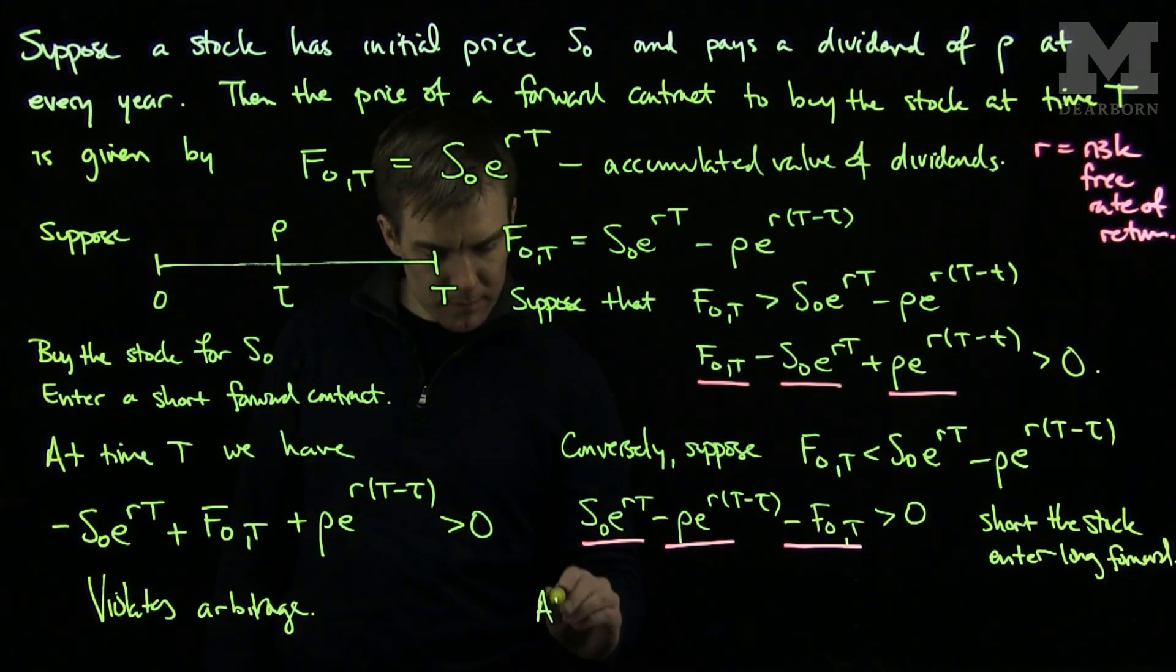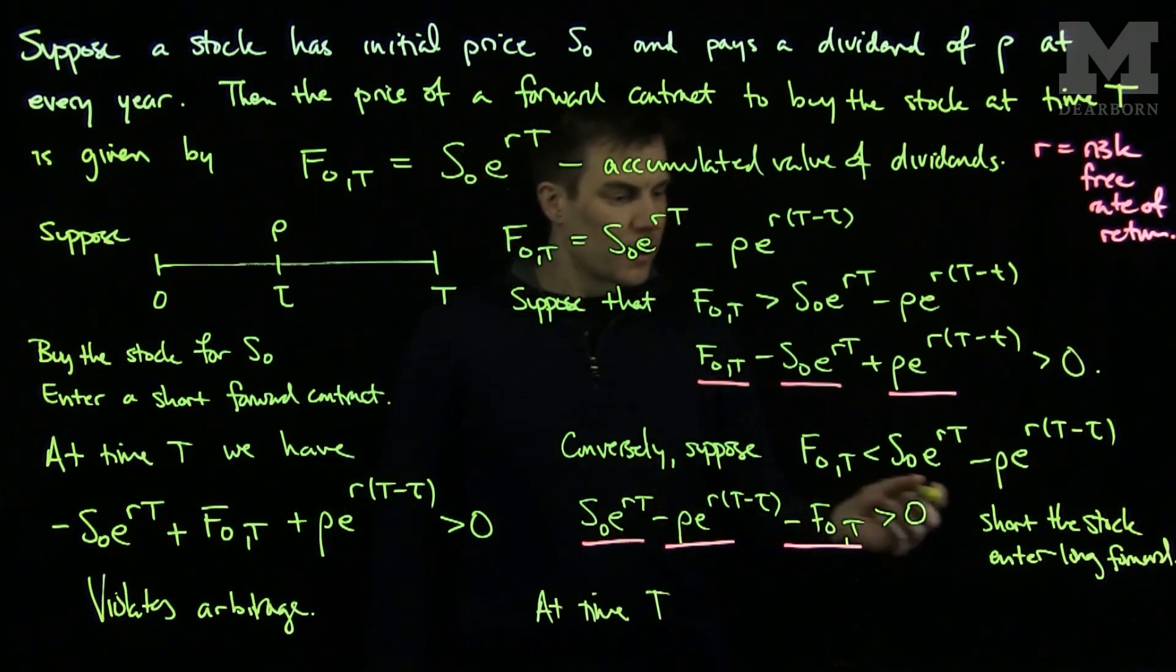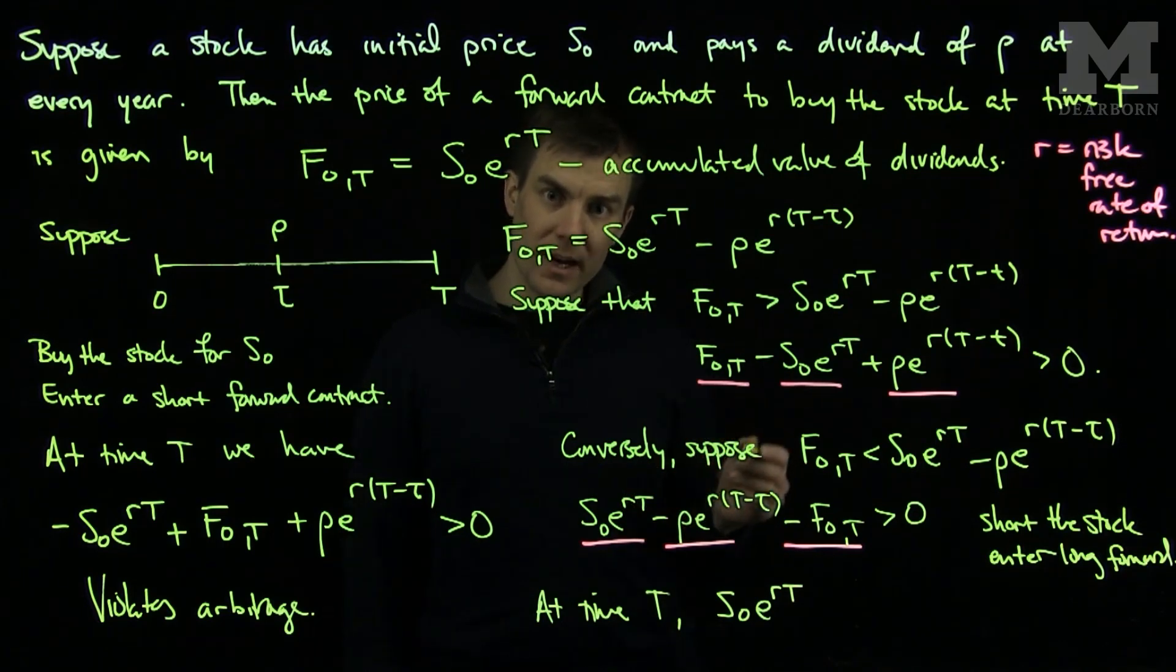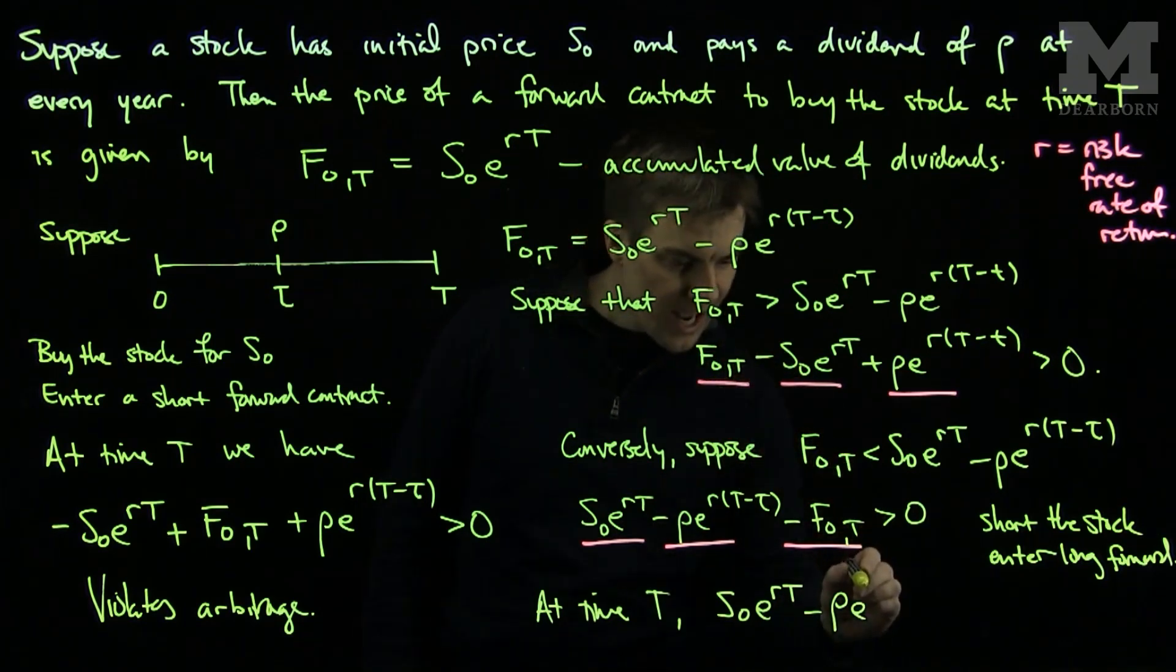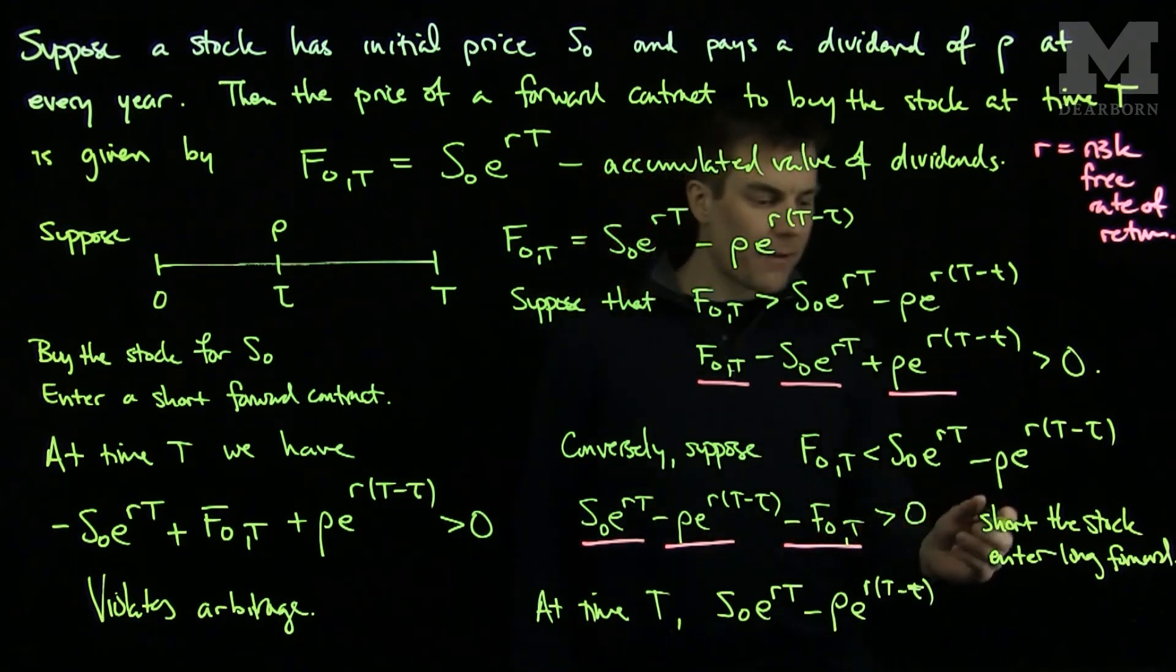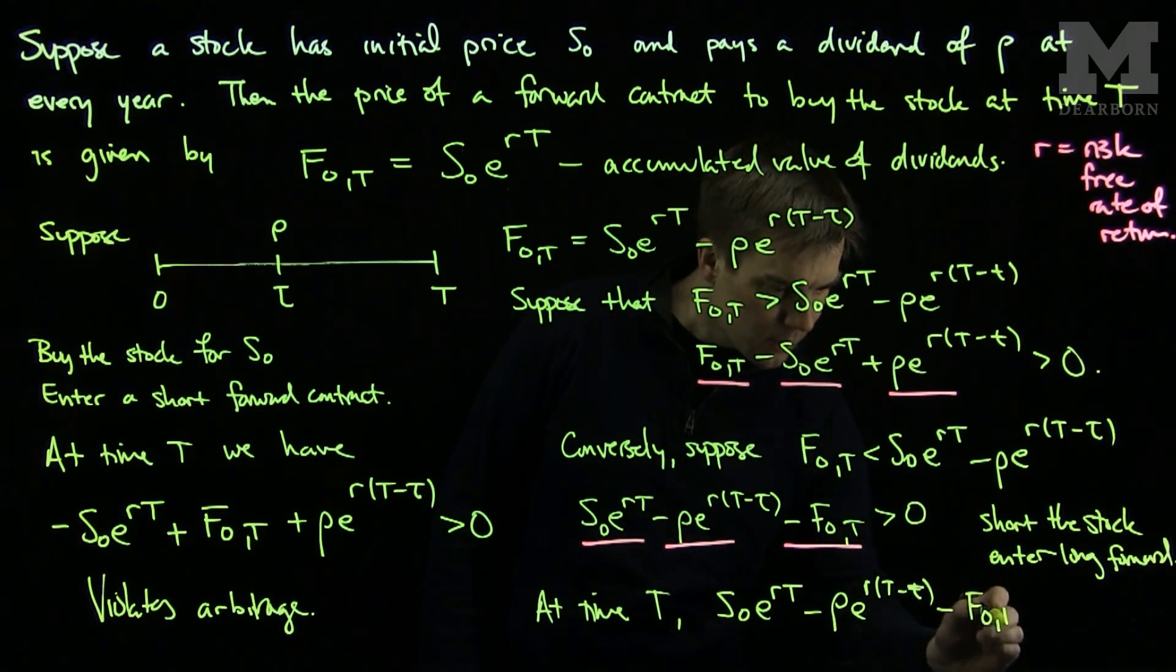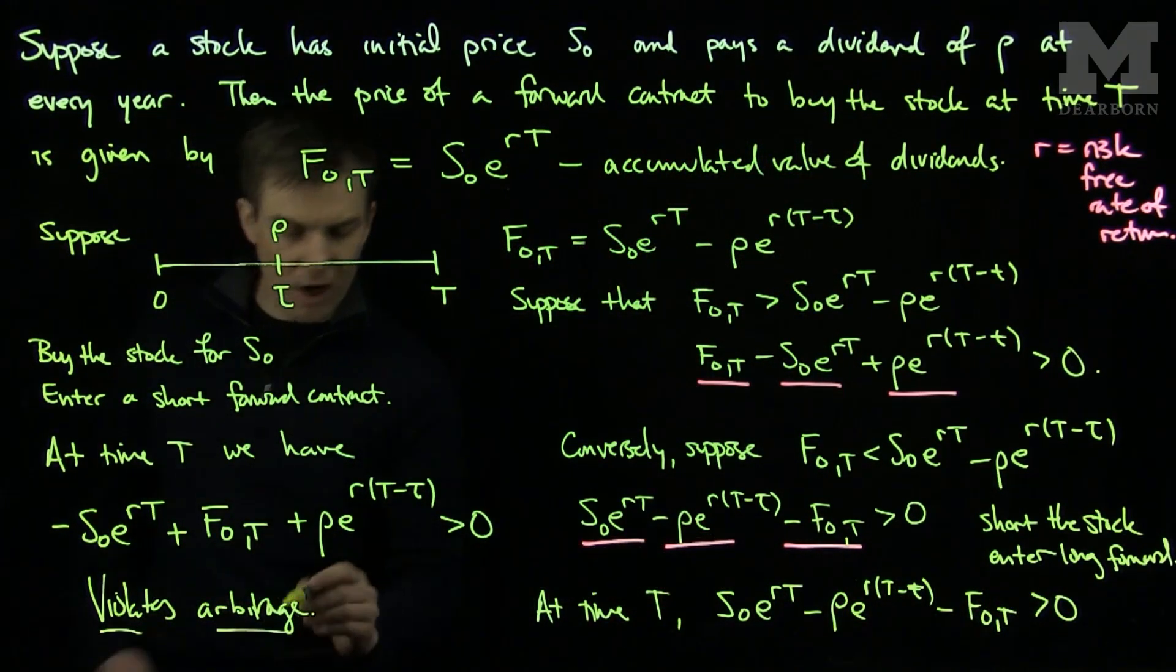At time T, we will have the following. Since I borrowed and sold the stock, I will have S0 e to the rT, from the amount I earned from the stock initially invested risk-free. I will owe the dividend along with the time it was allowed to evolve. That's what I will owe. And then, I will have to settle the forward contract by purchasing the stock back. So, I will purchase it for F0T, but we know this expression is positive. So, I have made a net gain again, and it is also a violation of arbitrage.